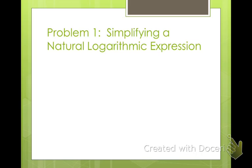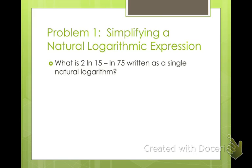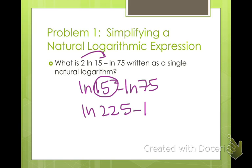All right, so simplifying a natural logarithmic expression. What is 2 natural log 15 minus natural log 75 written as a single natural logarithm? So rules that apply for logarithms also apply for natural logarithms. So if this were just a log, what would we do first? Well, we'd take and rewrite that 2 as an exponent of 15. So it's natural log 15 squared minus natural log 75. And then we could square this. What is 15 squared? That's 225. So natural log 225 minus natural log 75.